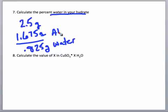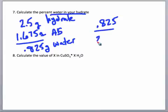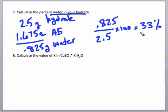That's the anhydrous salt and that's the original hydrate. So to figure out what the percent water is, we're going to take the water part over the whole thing, times it by 100, and when we do that, we'll get 33%. So according to our lab, our hydrate was 33% water.